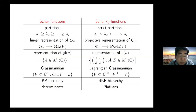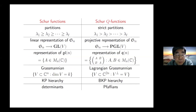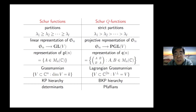Here is a comparison between Schur Functions and Schur Q Functions. Both are symmetric functions. Schur Functions are parameterized by partitions, which are weakly decreasing sequences of non-negative integers. Schur's Q Functions are parameterized by strict partitions, which are strictly decreasing sequences. The two have several similar properties and appear in parallel situations.